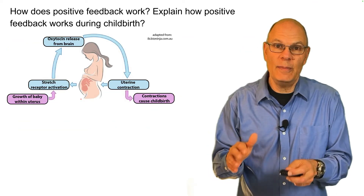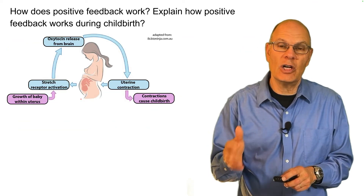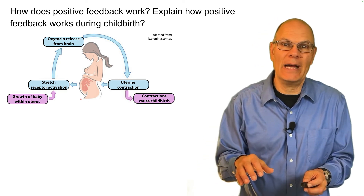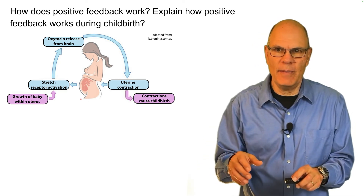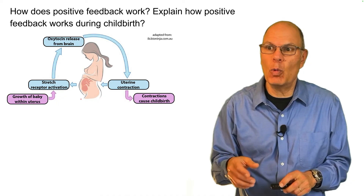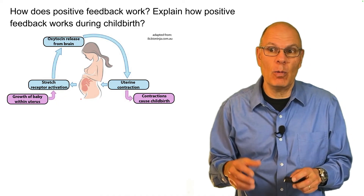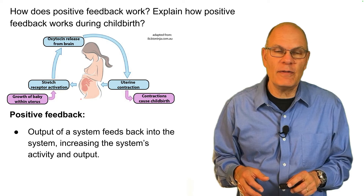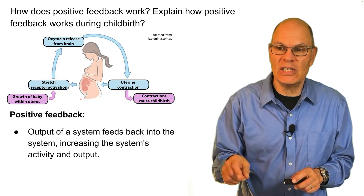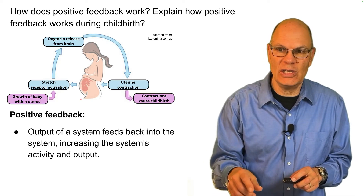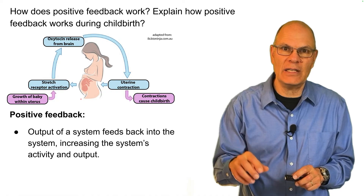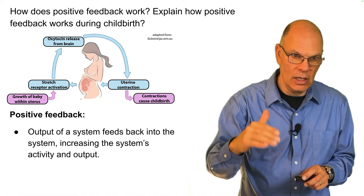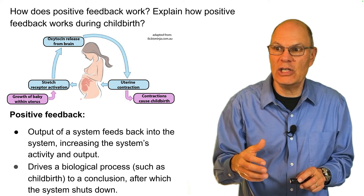All the biological feedback loops discussed so far have involved negative feedback. In positive feedback, the output of a system feeds back into the system, increasing the system's activity and output. It doesn't involve the quieting that leads to homeostasis — it involves acceleration. It drives a biological process to a conclusion, after which the system shuts down.